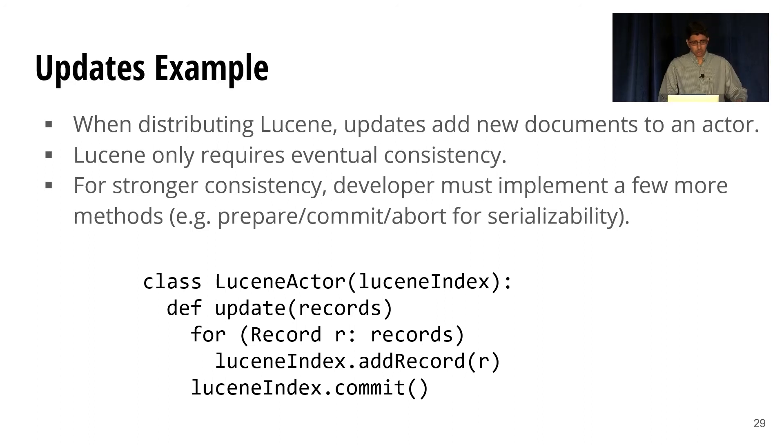For stronger consistency, we would ask developers to implement a few more methods — say, prepare, commit, and abort — for serializability.